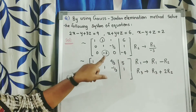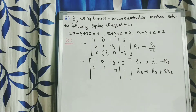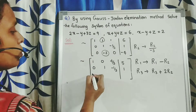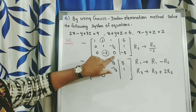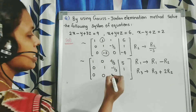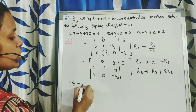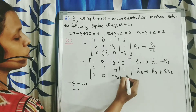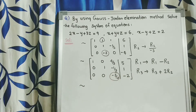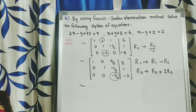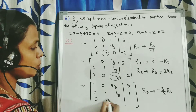Next converting minus 2 in R3 to 0 using the transformation R3 tends to R3 plus 2R2. We get: 0 plus 0 is 0, negative 2 plus 2 is 0, 0 plus 2 times negative 1 by 3 is negative 2 by 3, negative 4 plus 2 times 1 is negative 2. Consider the third row; the first non-zero element is negative 2 by 3. Convert it to 1 using R3 tends to minus 3 by 2 times R3. We get row 3 as: 0, 0, 1, 3.